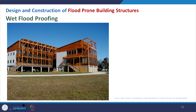Another wet flood proofing example shows removable panels that can be removed during a flood so that water can easily pass in the predominant direction depending on the slope. Everything is well calculated — from which direction the water will come and in which direction it will go. This could be helpful. Wet flood proofing technique may be adopted to reduce risks during floods.